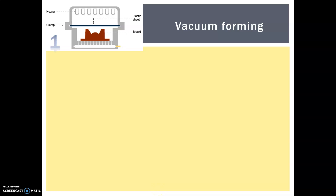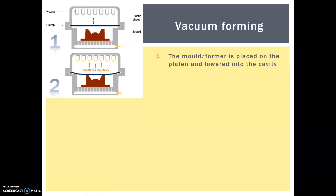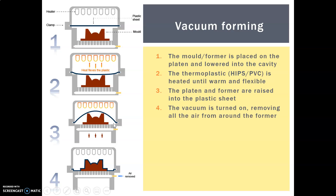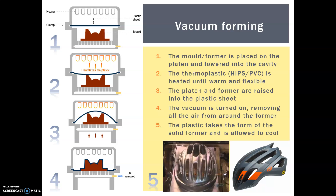In vacuum forming, the mould or former is placed onto a platen — like a plate or bed — and lowered into the cavity of the vacuum former. A large heater warms the plastic sheet until it becomes flexible and starts to dip down a little. The platen and former are then raised up into the plastic sheet, and sometimes air is injected into it as well. The vacuum is turned on, removing all the air from around the former, and you're left with a solid plastic form. It's taken out, allowed to cool, and the flashing — the excess around the edges — is trimmed off.